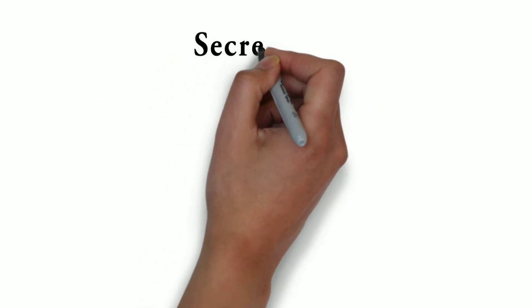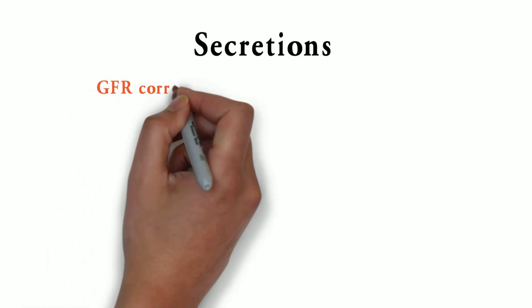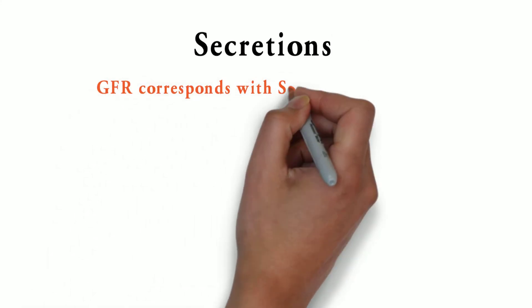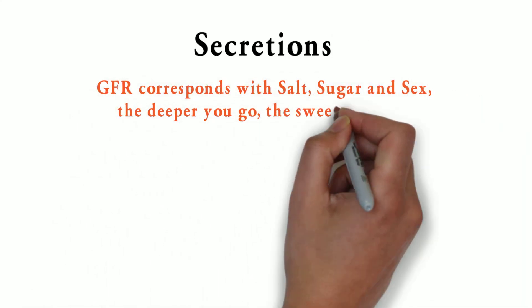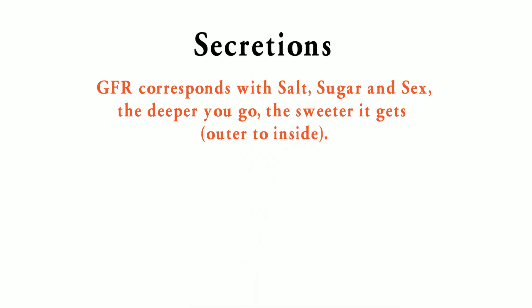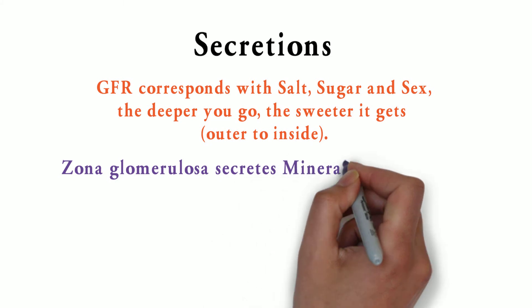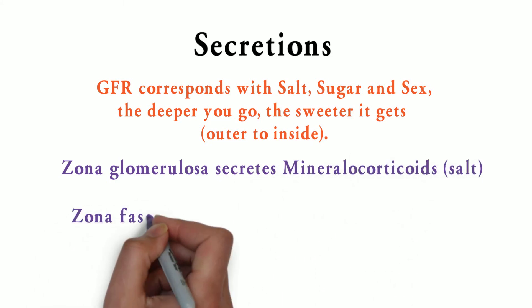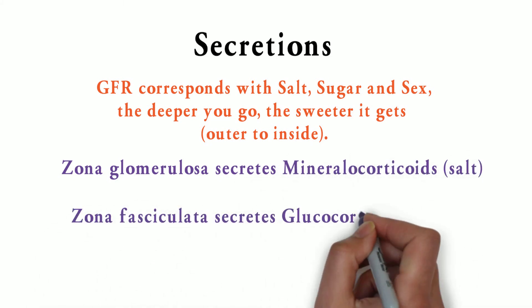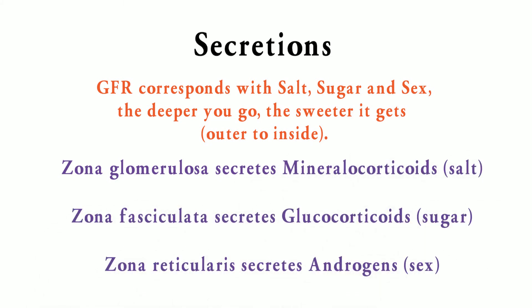The mnemonic for secretion — GFR corresponds with salt, sugar, and sex. The deeper you go, the sweeter it gets. From outside to inside: zona glomerulosa secretes mineralocorticoids, zona fasciculata secretes glucocorticoids, and zona reticularis secretes androgens.